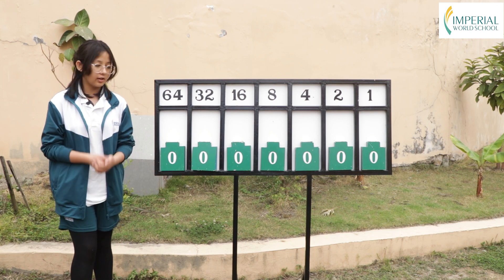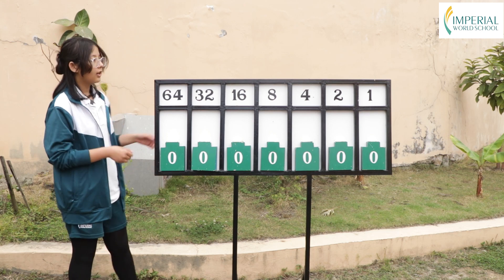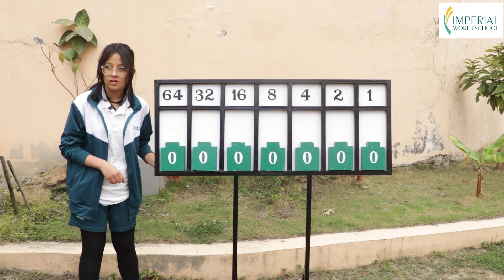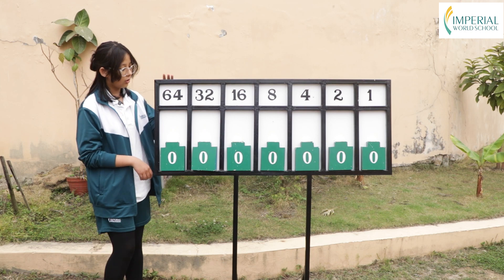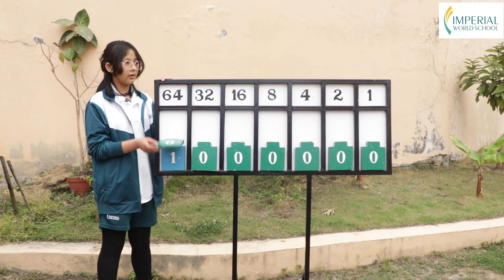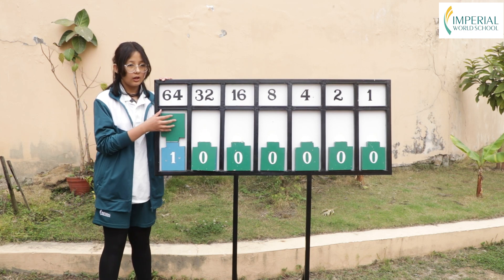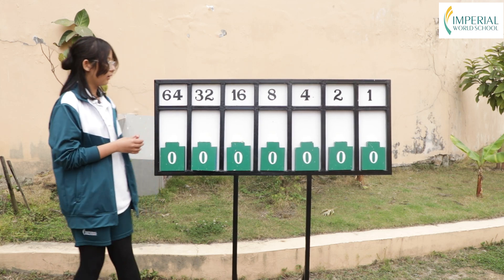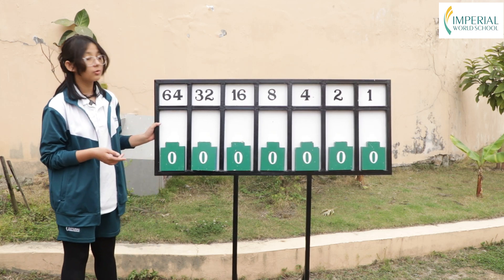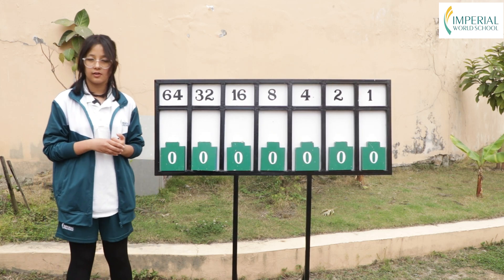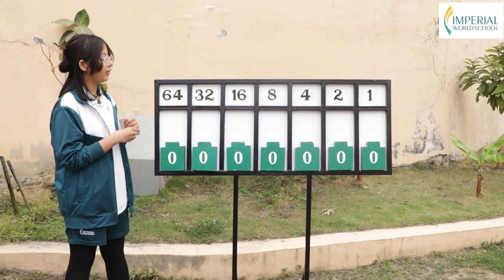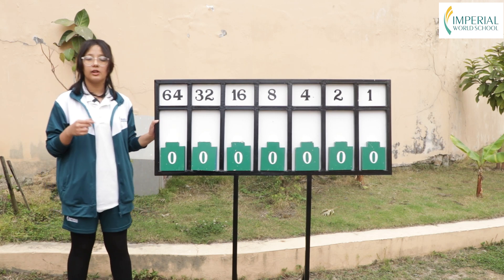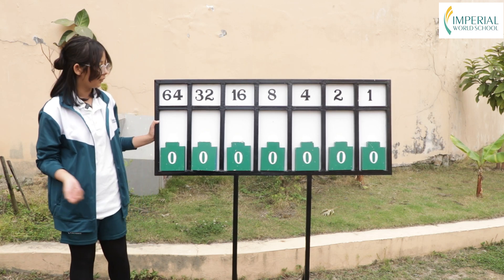Till now we've been studying that in binary terms there only can be written two digits, which are 0 and 1. Using these digits we do different calculations in binary terms, which we will do furthermore.